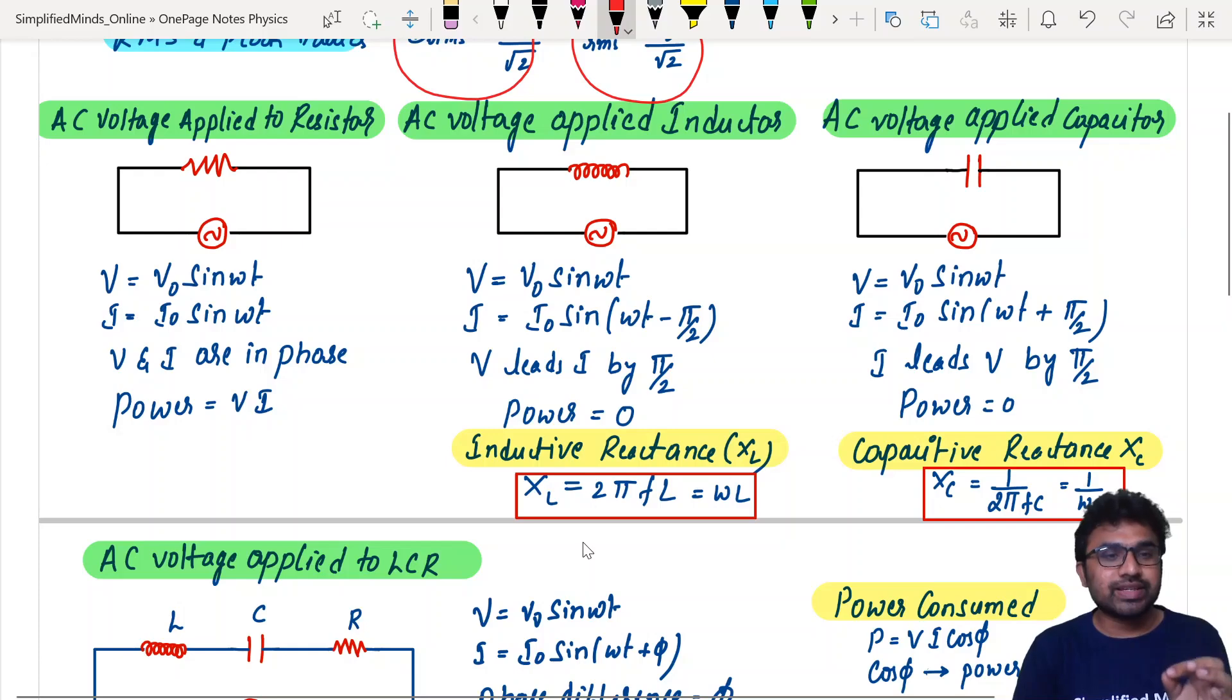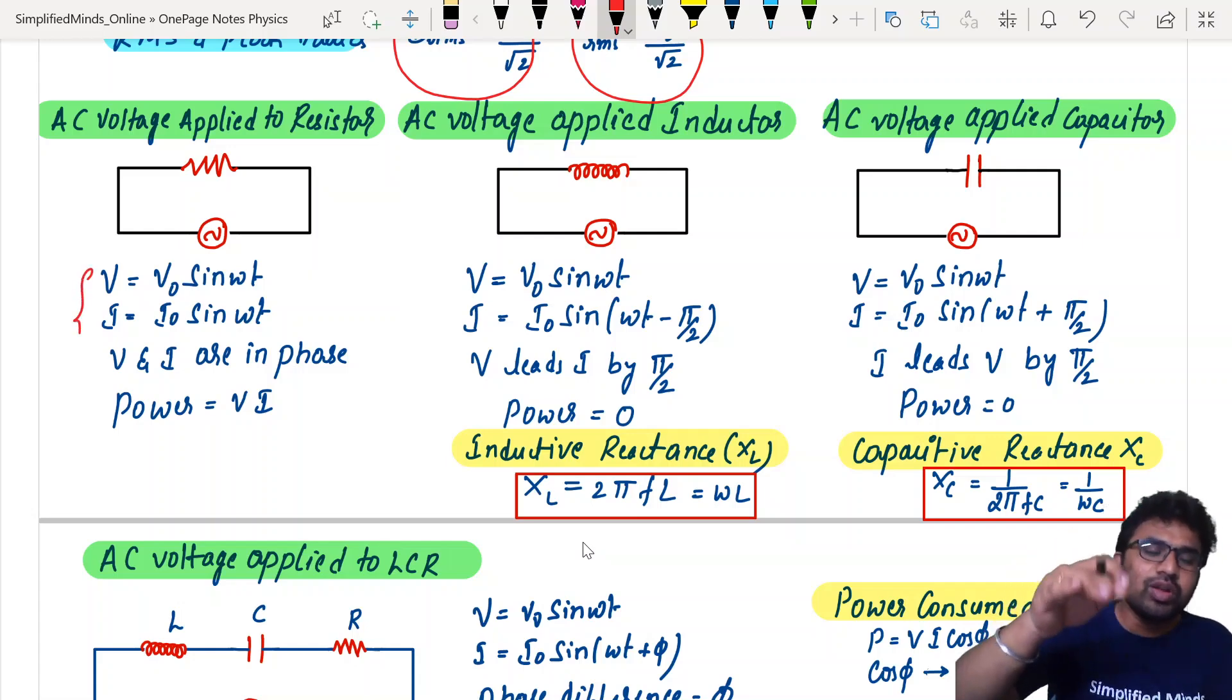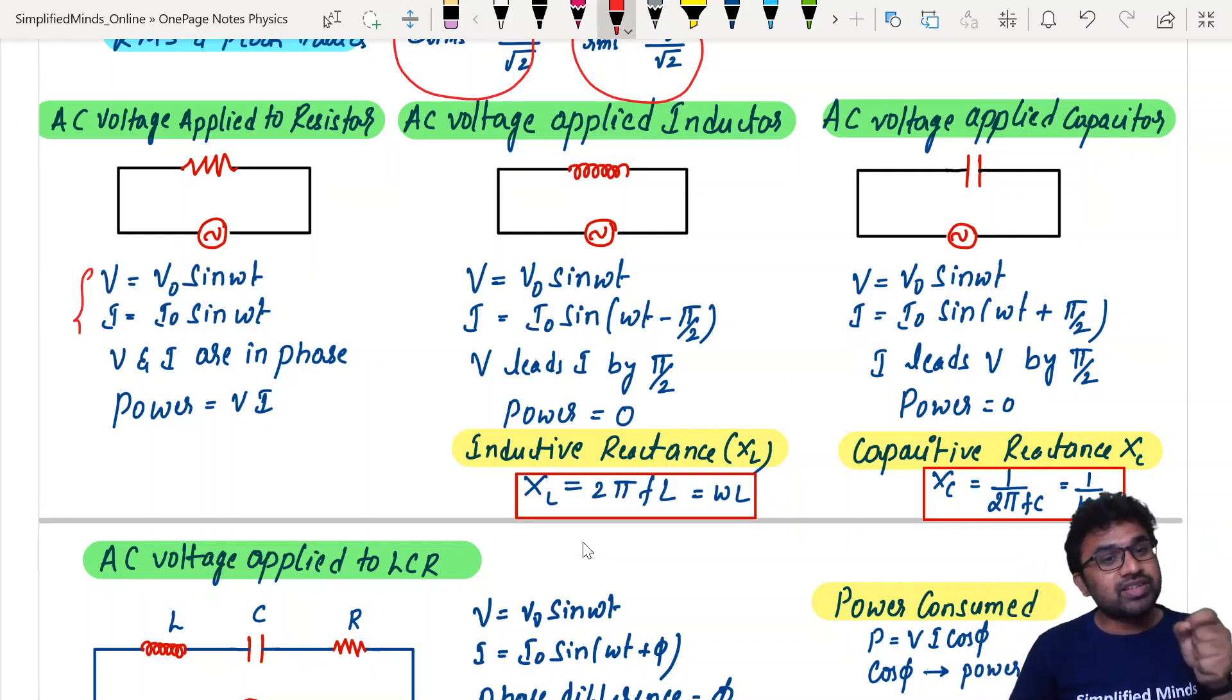AC voltage applied to resistor, voltage and current they will be in phase. There is power consumption because resistor always consumes power. Power is equal to V into I, VRMS into IRMS. V equals V0 sin omega t, I is equal to I0 sin omega t. V and I both are in phase because phase difference is zero. Phase difference, power difference even in wave optics we'll discuss.